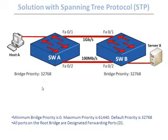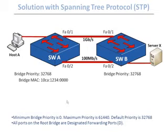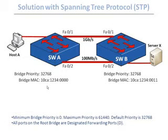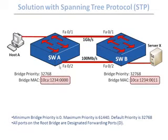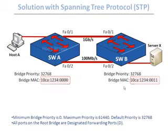If the priority is tied — as in our case with switch A and switch B — the root bridge is the switch with the lowest MAC address. In our case, the MAC address of switch A is lower than the MAC address of switch B, so switch A is said to be the root bridge.